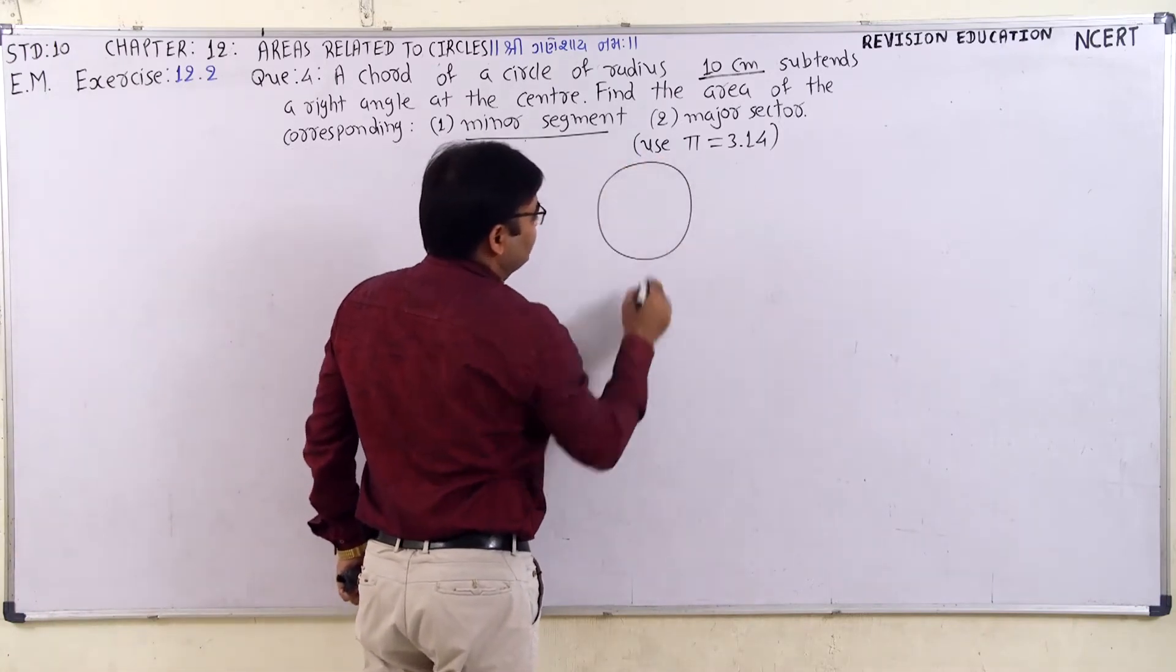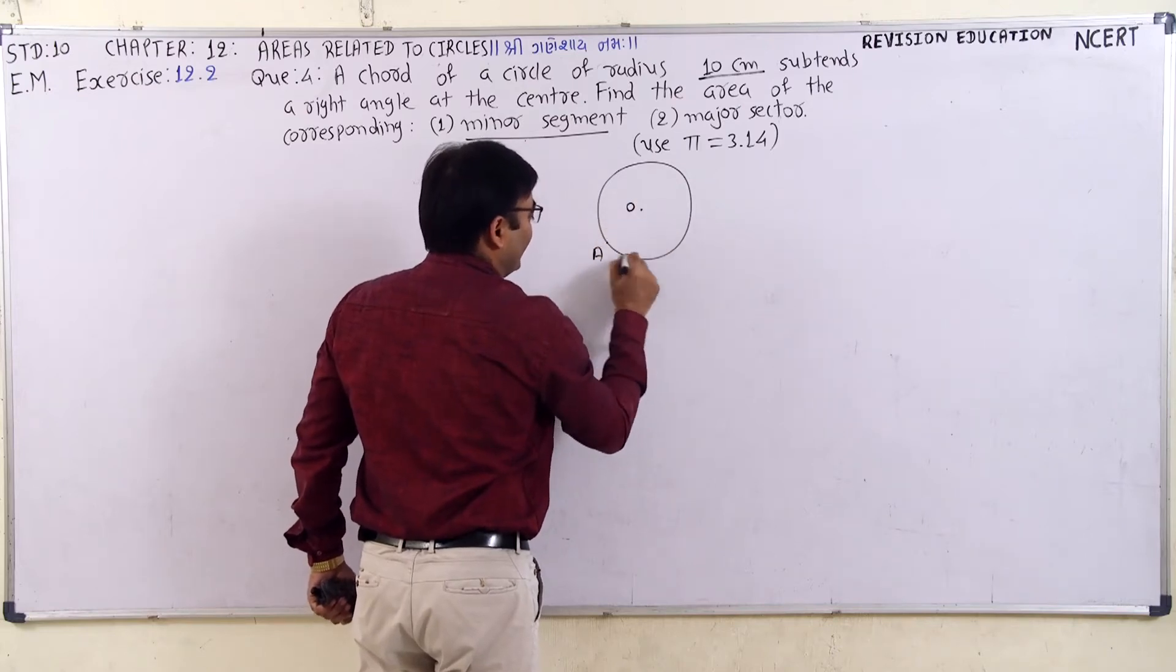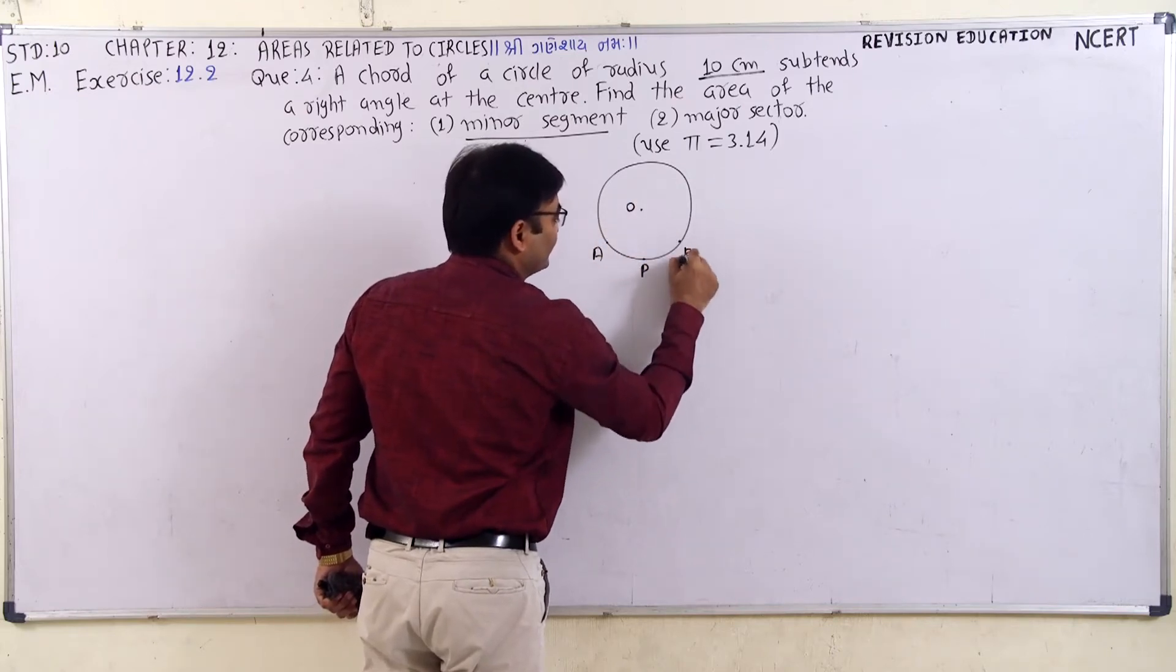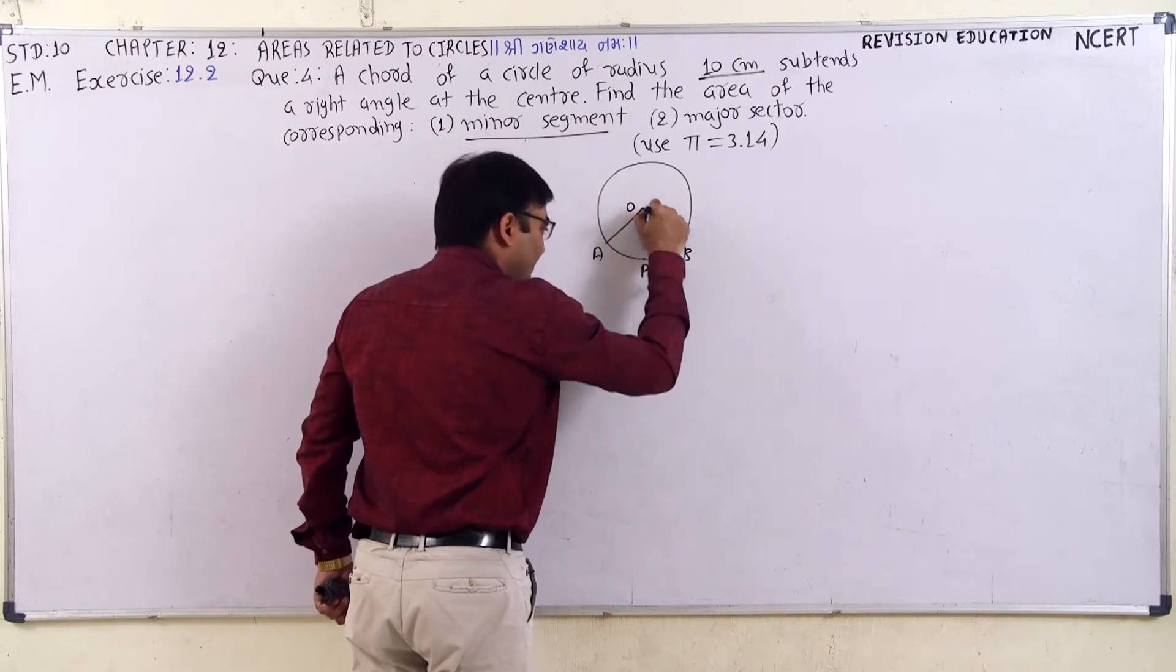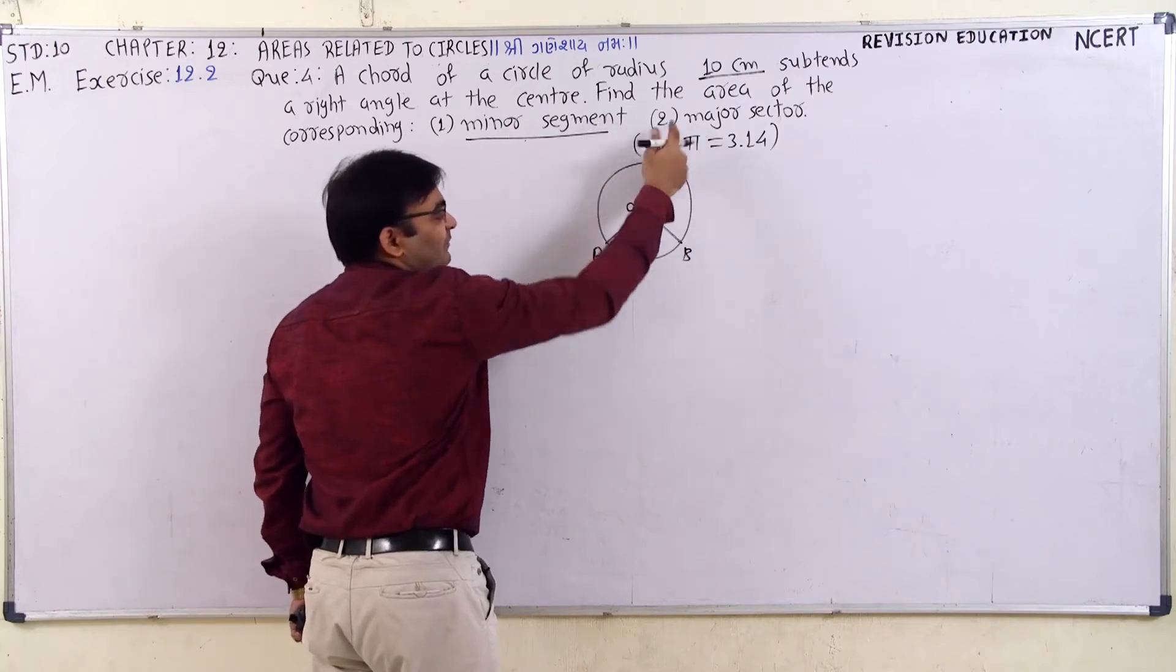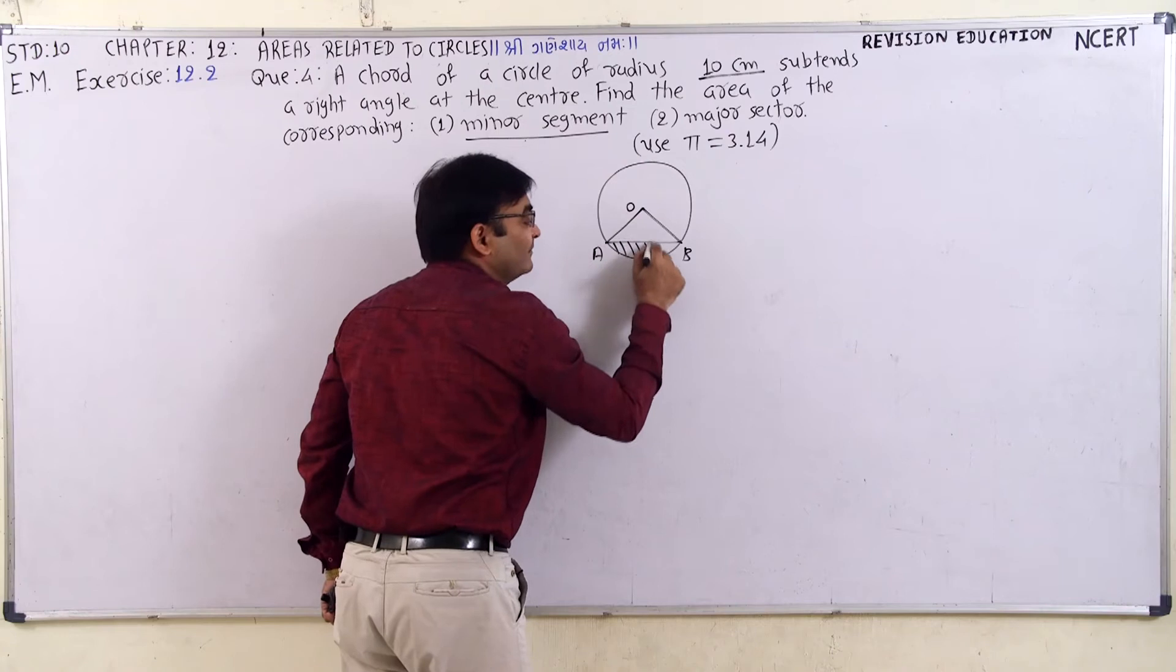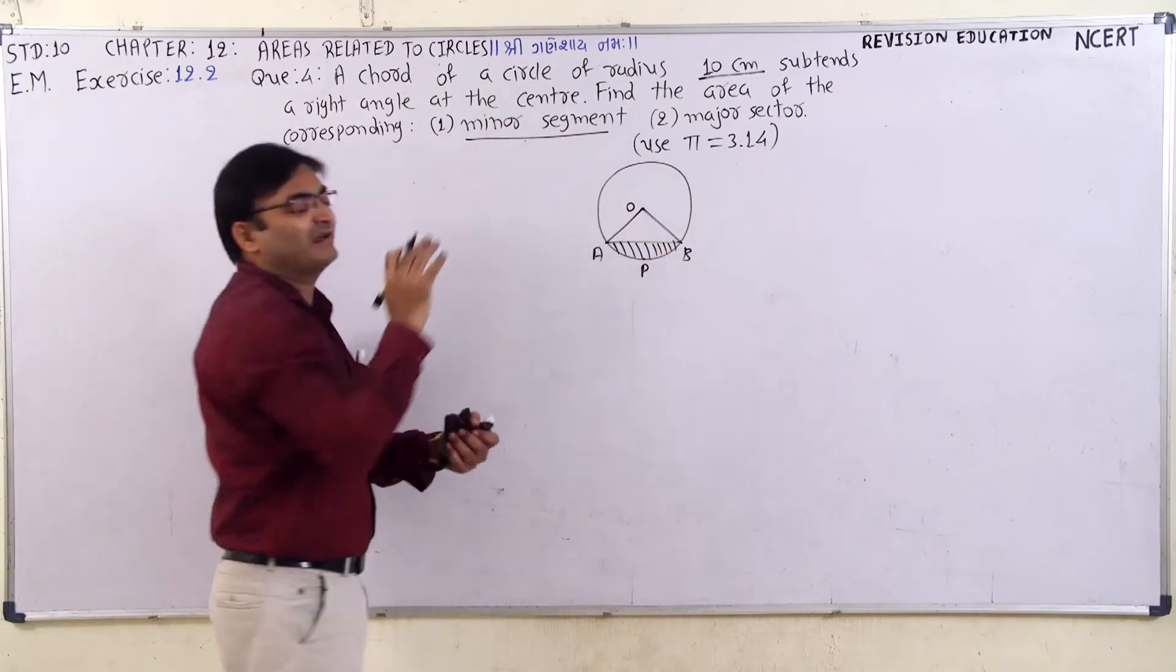Here is the circle with center O, points A, P and A. This is the minor sector, major sector. Major sector is not the minor segment, but we have to find the area of minor segment.